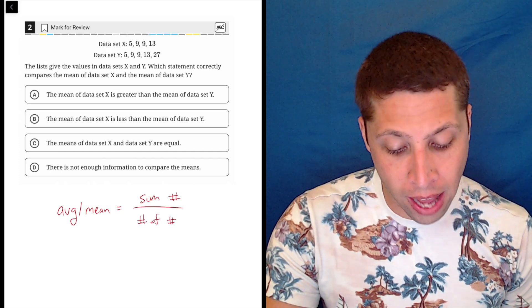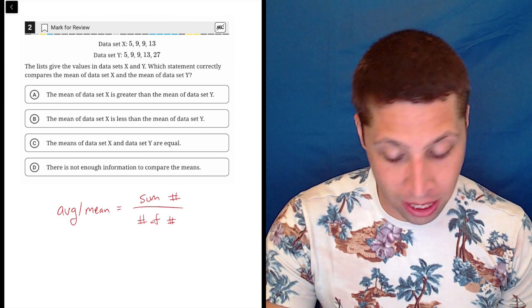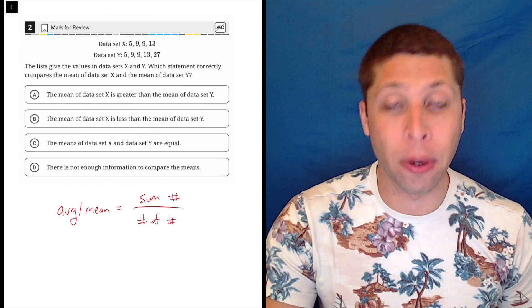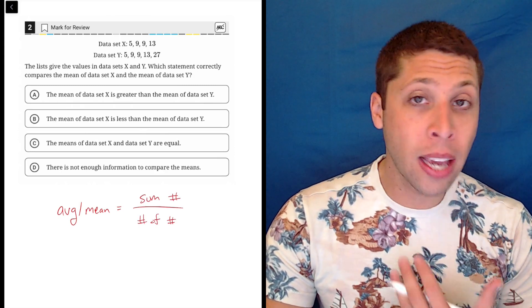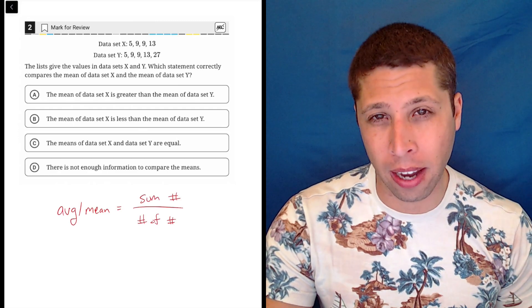So for data set X, for example, there are four numbers. We would add them up, 5 plus 9 plus 9 plus 13. In data set Y, there are five numbers, and so that would be our denominator. But in this case, we do not need to actually calculate the mean. And if you're doing that, you're really just wasting time.